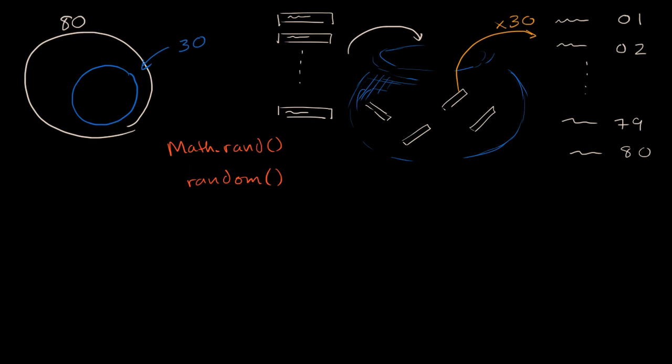And then you use a randomly generated list of numbers. And so let's say that's our randomly generated list of numbers. And it keeps going well beyond this. And you start at the beginning. And you say, okay, we're interested in getting 30 two-digit numbers from one to 80, including one and 80.